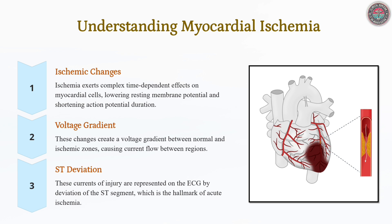ECG changes in ischemia arise from electrical imbalances between ischemic and healthy myocardium, generating injury currents that alter conduction and cause ST-segment shifts. These patterns help differentiate ischemia from infarction and localize the affected region.